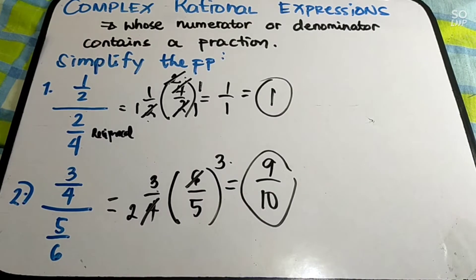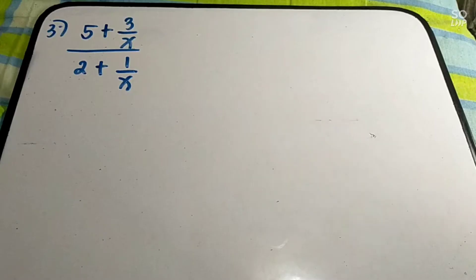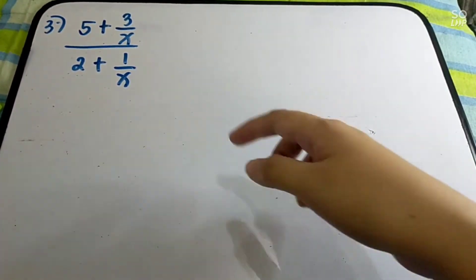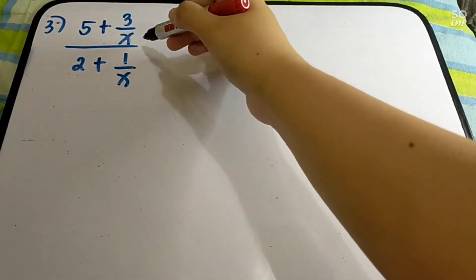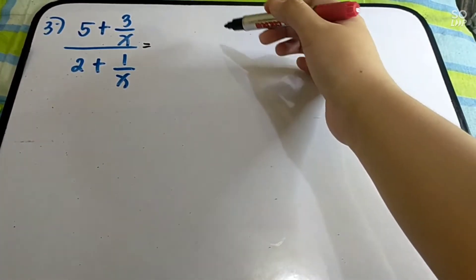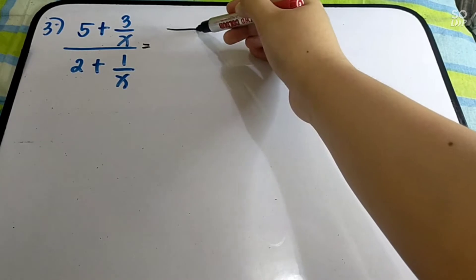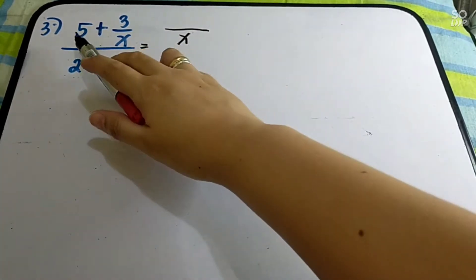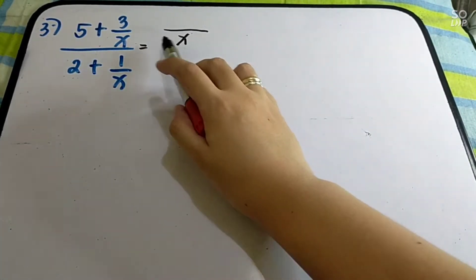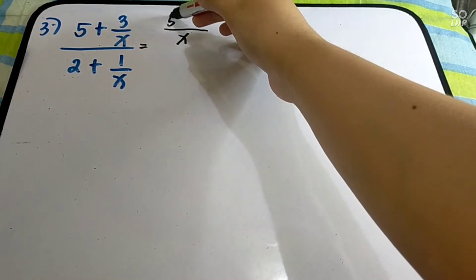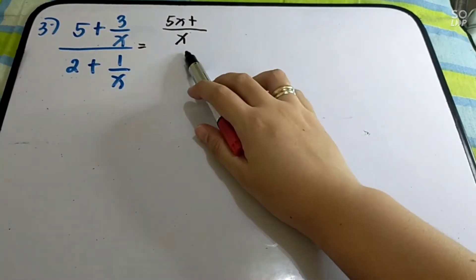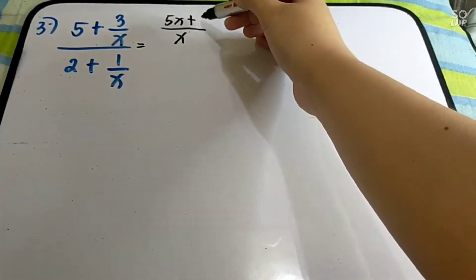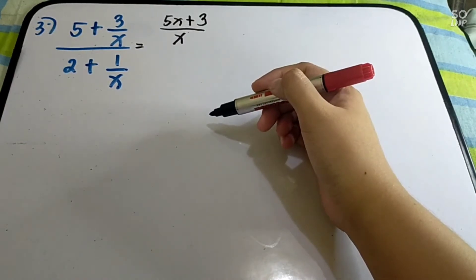Let us have another example — now with variables. Number 3: (5 + 3/x) over (2 + 1/x). What we do here is simplify the numerator first. We need a single denominator, and the LCD here is x. Since 5 has no denominator, multiply x times 5, giving 5x. Then x divided by x is 1, times 3 gives us 3. So the numerator becomes (5x + 3) over x.